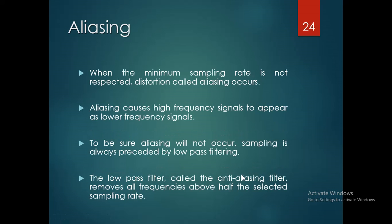When the minimum sampling rate is not respected, distortion occurs, which is called aliasing. Aliasing causes high frequency signals to appear as a low frequency signal. To ensure that aliasing will not occur, sampling is always preceded by low pass filtering.